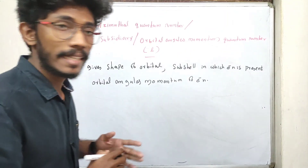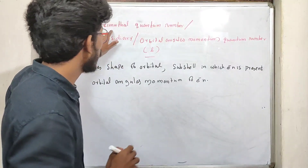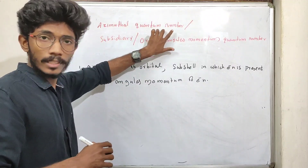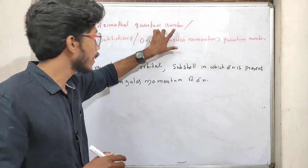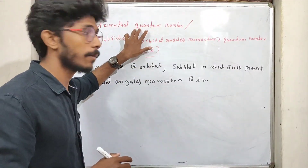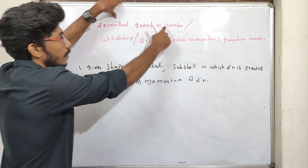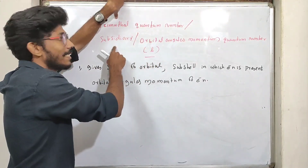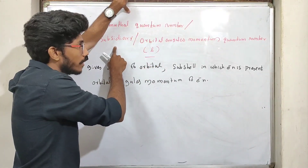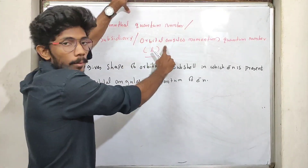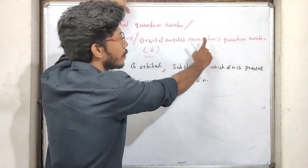The next one is the azimuthal quantum number, also called the subsidiary quantum number or orbital angular momentum quantum number.